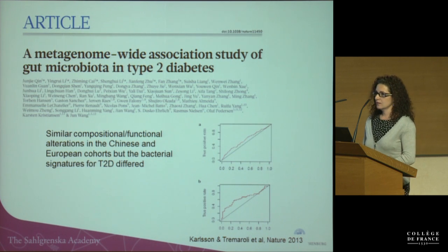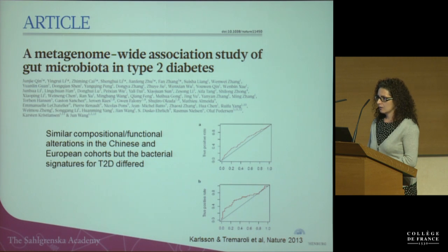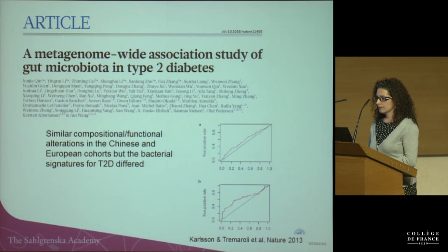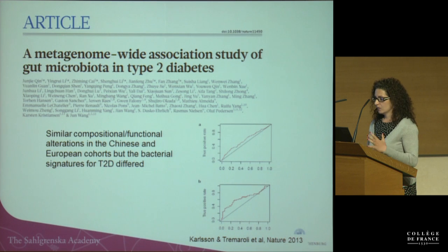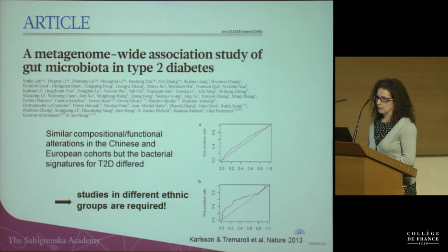A similar study had been published a few months before ours. In our Swedish cohort and the Chinese cohort of that study, there were similar compositional and functional alterations. However, the microbial signatures differed for the classification of type 2 diabetic subjects. We trained a model on the Chinese cohort and used it to classify type 2 diabetic people in our cohort, and we didn't observe good prediction. Crossing populations and models produced much lower scores, meaning microbial signatures differ between ethnic groups.